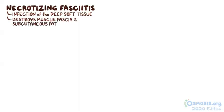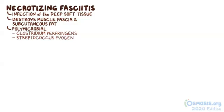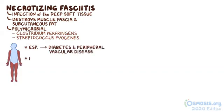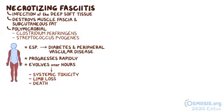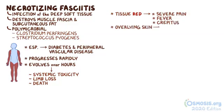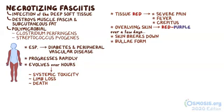Sixth, there's necrotizing fasciitis, which is an infection of the deep soft tissue that destroys the muscle fascia and overlying subcutaneous fat. It can be polymicrobial and often involves Clostridium perfringens or Streptococcus pyogenes. It commonly involves the extremities, particularly in those with diabetes and peripheral vascular disease, and it progresses rapidly — evolving over hours, leading to systemic toxicity, limb loss, and death. Initially, the tissue may be red, but then can quickly cause severe pain, fever, and crepitus, with the overlying skin developing into patches of red-purple. Over a few days the skin can break down, bullae can form, and areas of gangrene can develop. The diagnosis is established with surgical exploration and it needs to happen right away.